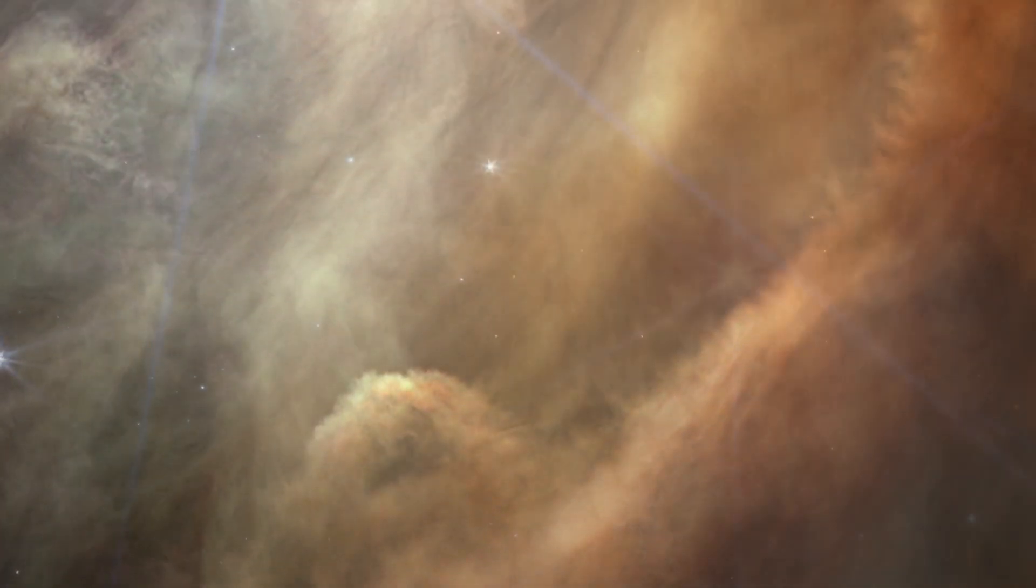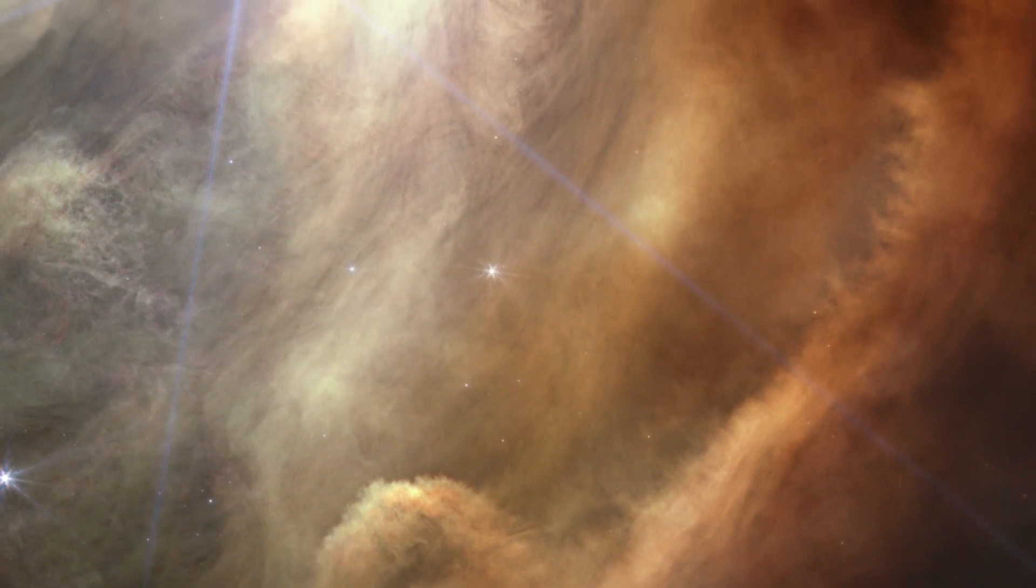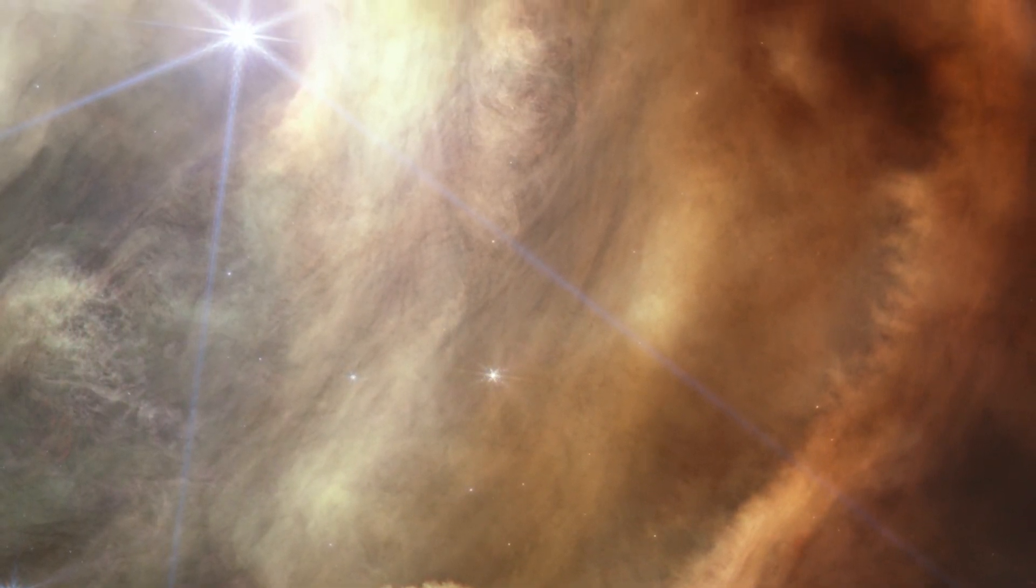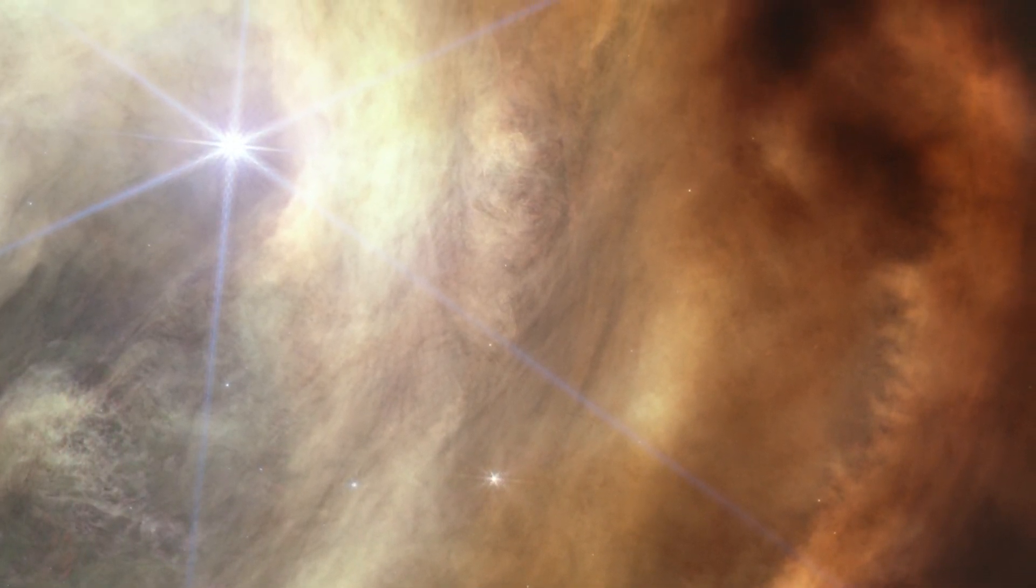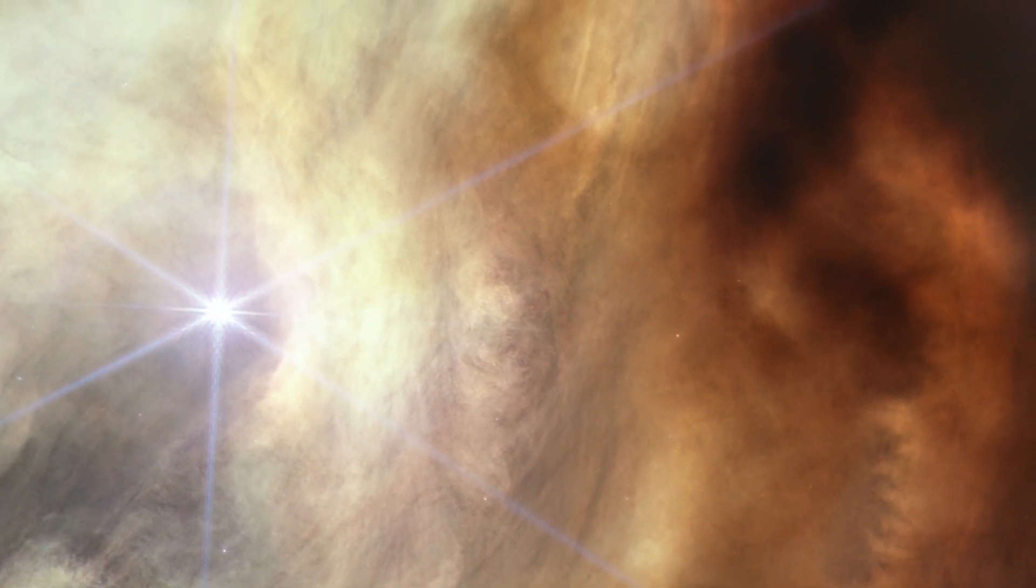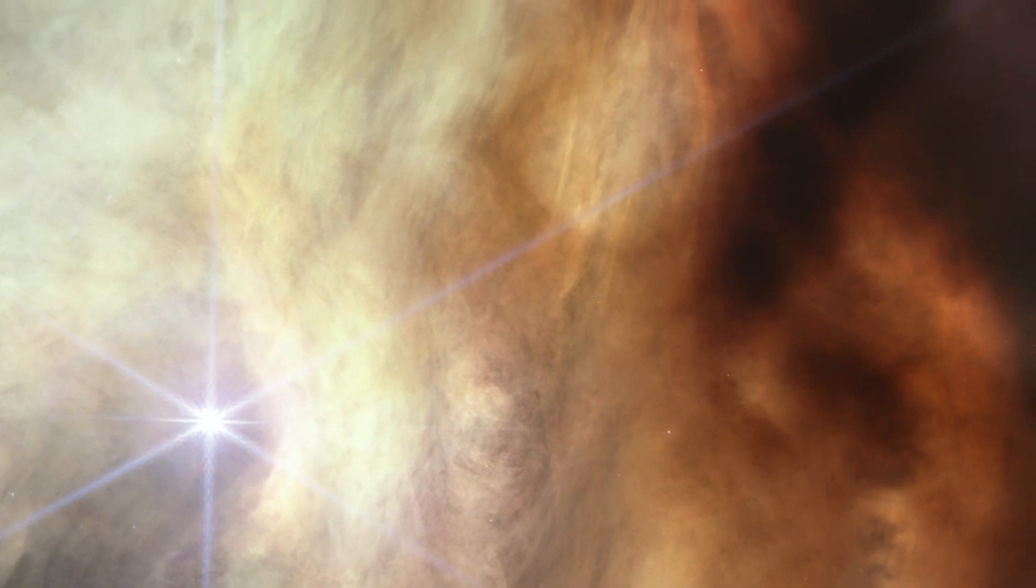The yellow-orange color comes from tiny sooty grains that astronomers call polycyclic aromatic hydrocarbons. Streamers of gas and dust form structures and textures unlike anything we have seen before.